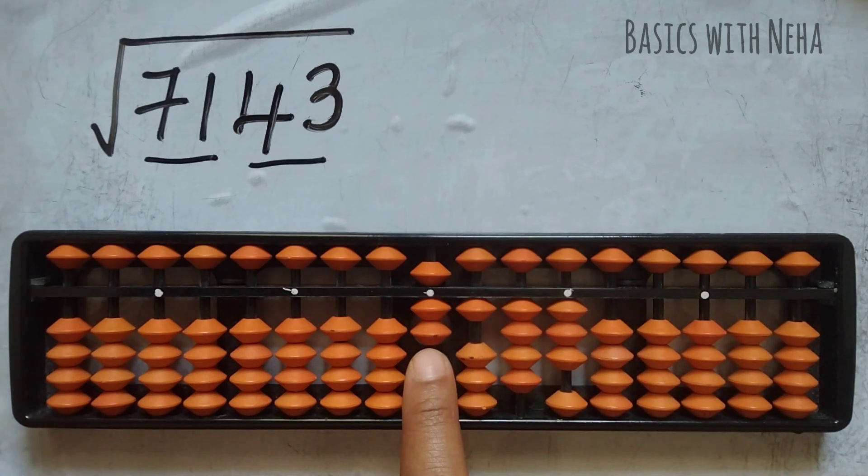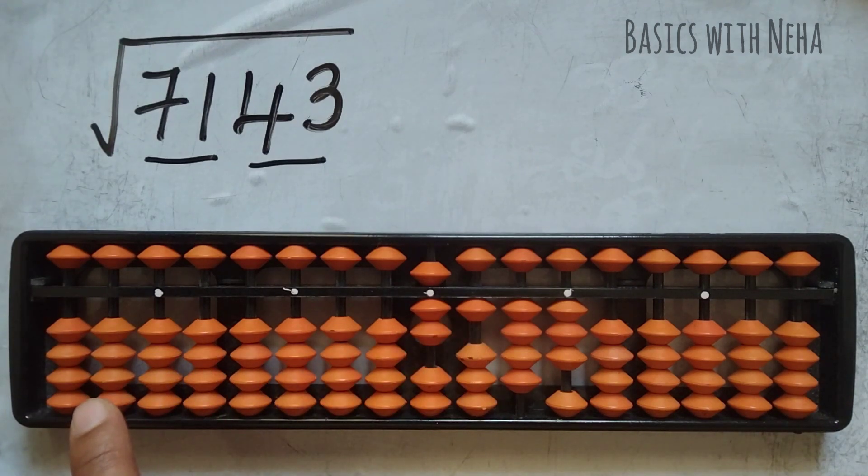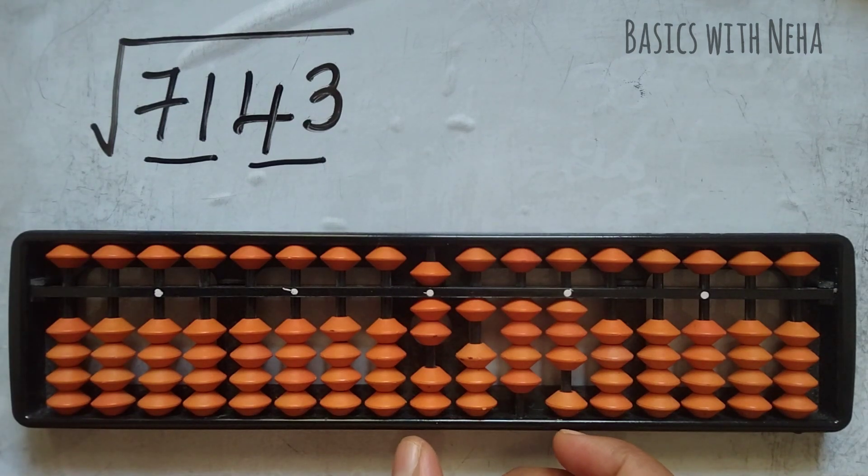Now I have to start from the first group from left side, so 71. I have to see which number when squared is near to 71. So I know that 8 eights are 64. Now let me show you which rod we have to exactly use. We have used four rods here, so I'm going to use four rods.